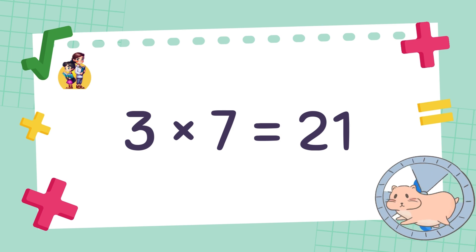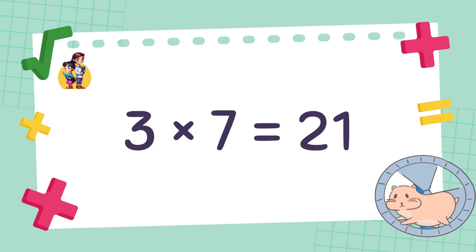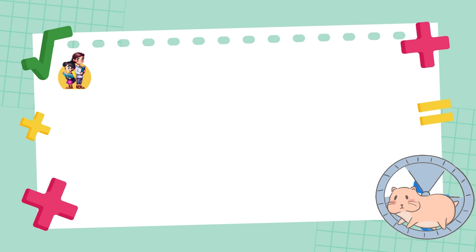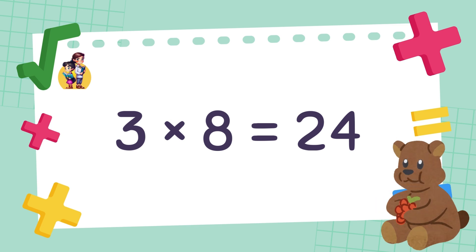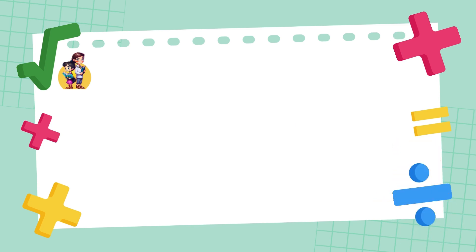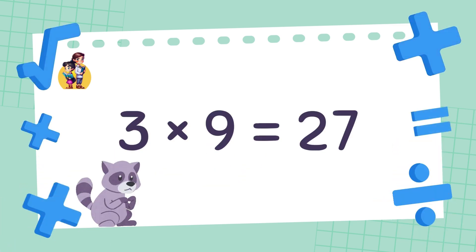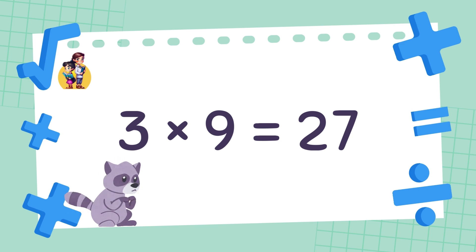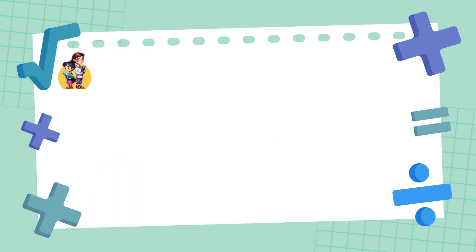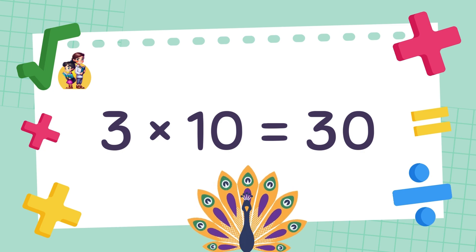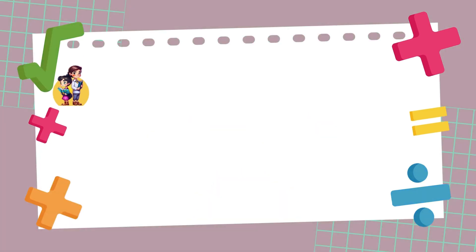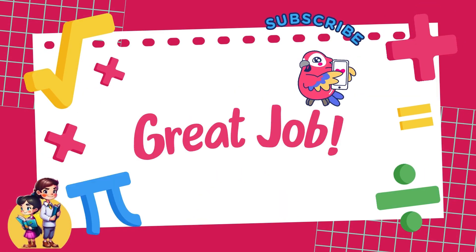3 x 7 is equal to 21. 3 x 8 is equal to 24. 3 x 9 is equal to 27. 3 x 10 is equal to 30. Great job!